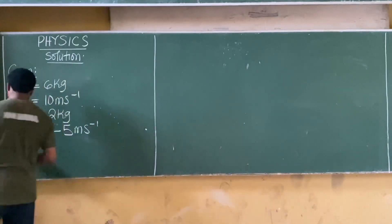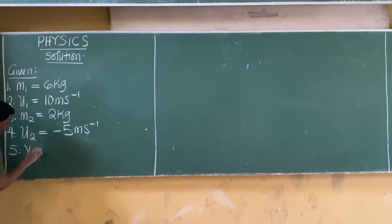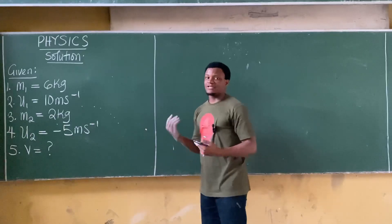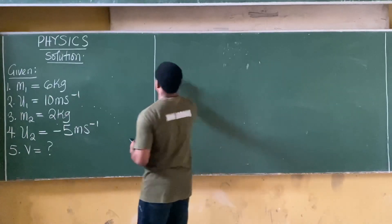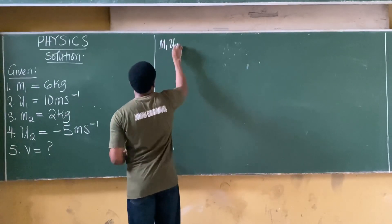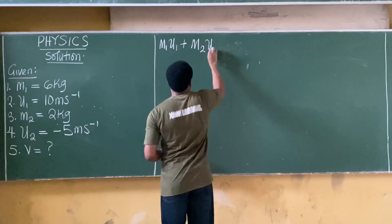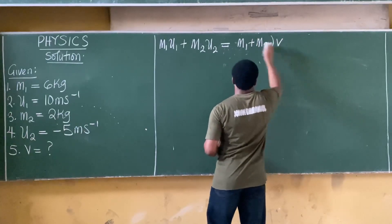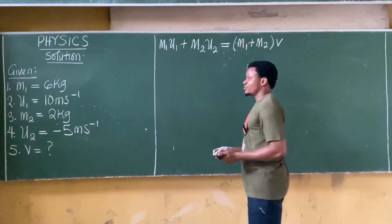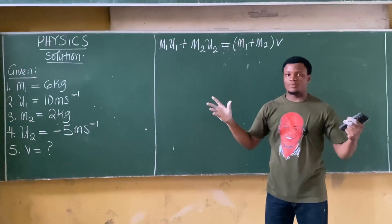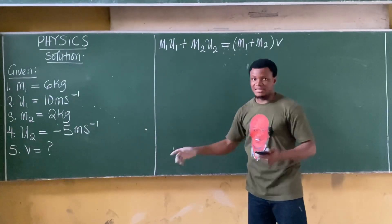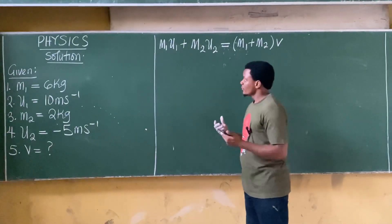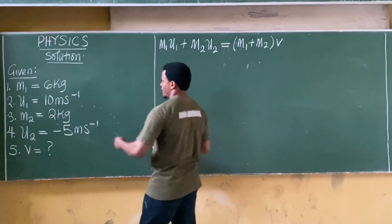This is a question on inelastic collision. For inelastic collision, the formula is: m1·u1 + m2·u2 = (m1 + m2)·v. You know it's inelastic when the two bodies move together with the same speed after collision.